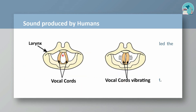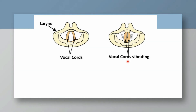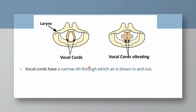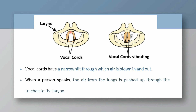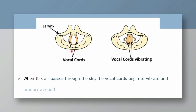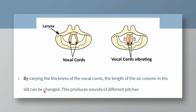This is the vocal cord. The thickness of the vocal cord will change the length of the air column in the slit. So this will produce different pitches of sound.